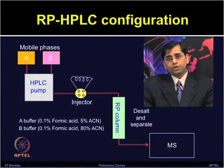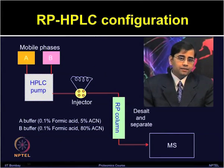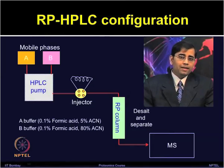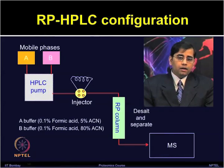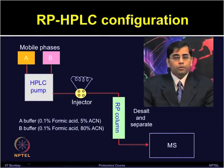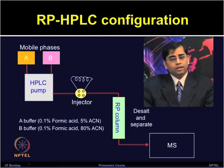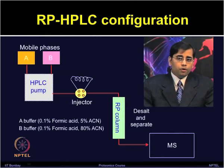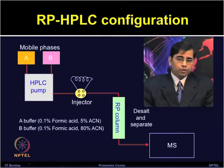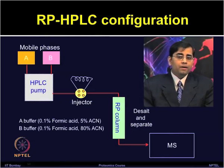In this slide, I have shown you the configuration for reverse phase HPLC. As you can see, there are two components in the mobile phase — A and B — linked with the HPLC pump. Buffer A can provide a range of 0.1 percent formic acid to 5 percent acetonitrile, and buffer B contains 0.1 percent to 80 percent acetonitrile. First, equilibrate the system in buffer A, then load the peptides in buffer A and wash them, then run the gradient of increasing mobile phase B.